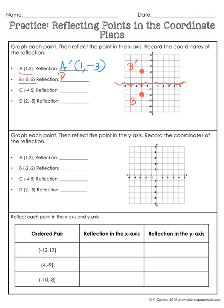So B' is at the point: starting at the origin, 2 to the left and 2 up — so the ordered pair for B' is (-2, 2).